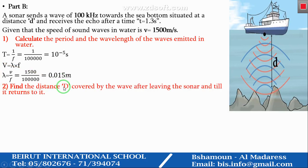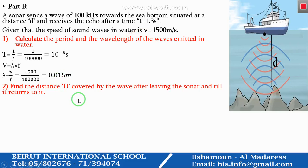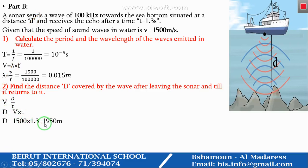Part 2: Find the distance D covered by the wave after leaving the sonar until it returns to it. We need to find the total distance of the echo, so we use the time of the echo which is 1.3 seconds. Using the relation v = D/t, so D = v times t = 1,500 times 1.3, which equals 1,950 meters. This distance does not represent the depth of the sea; it represents the distance covered by the wave in both the downward and the upward propagation.